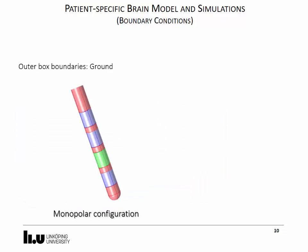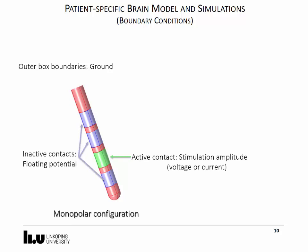The active contact is set to the stimulation amplitude, either voltage or current. The non-active electrodes are set to floating potential. The shaft is set to electrical insulation.